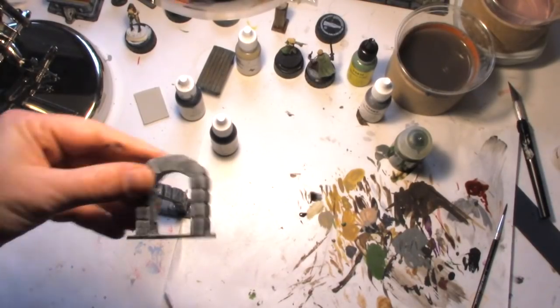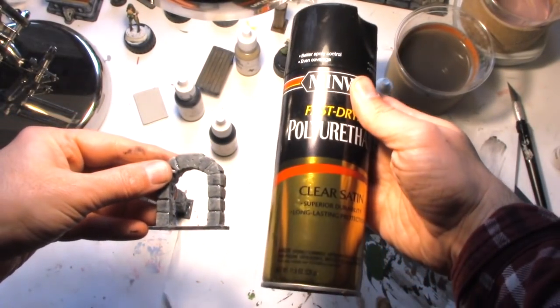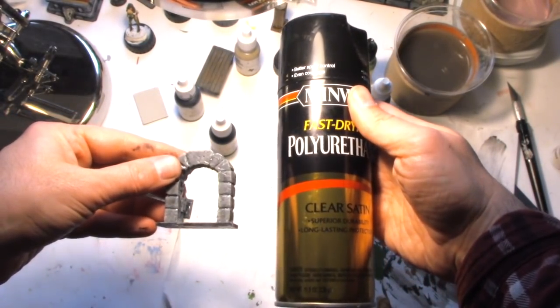Finally, I spray it with two or three coats of Minwax Clear Polyurethane. This will seal the glue into place and protect the model from my player's Dorito fingers.